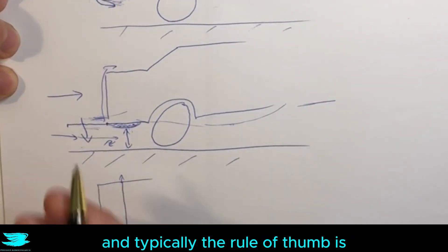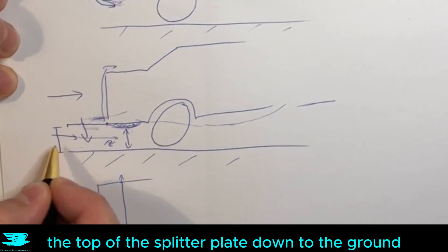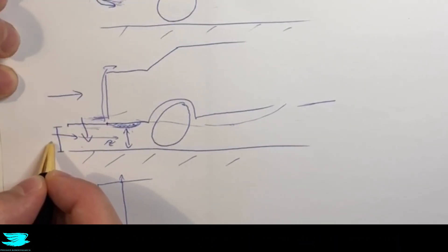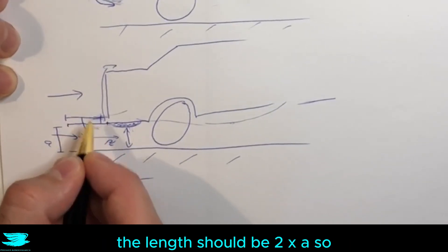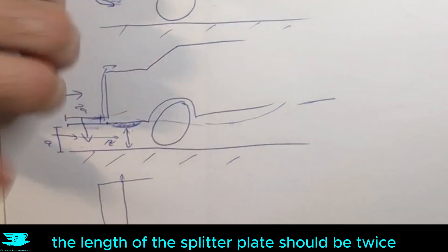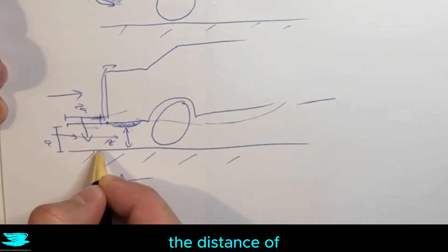And typically, the rule of thumb is the distance from the top of the splitter plate down to the ground, let's call this A, this distance of the splitter plate, the length, should be 2A. So the length of the splitter plate should be twice the distance from the height of the car.